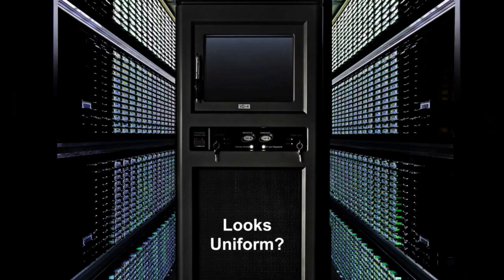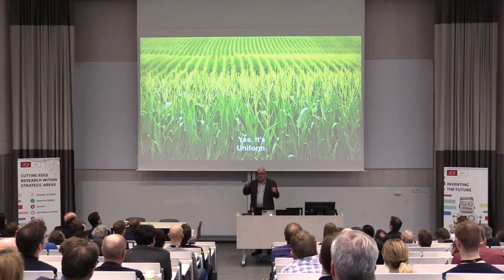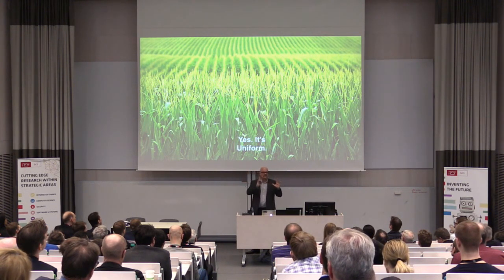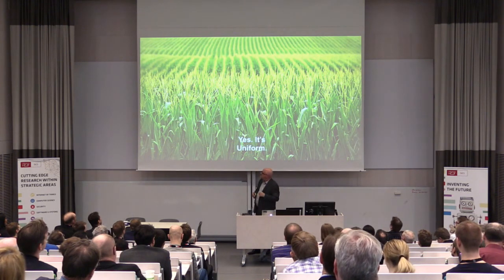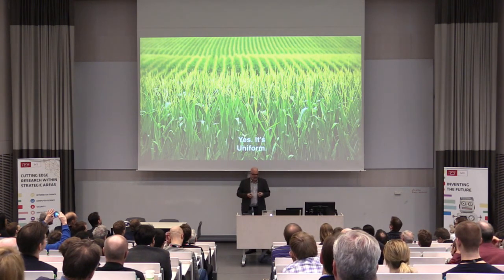Uniformity really comes into play here. A data center looks uniform because of the economics of the application. It's like cornfields in Iowa — a monospecific ecosystem, just one species, probably genetically modified, probably one type of DNA. That's very economical and very scalable. If you want to add a couple more acres, you don't have to do a lot of thinking about it. The DNA is the app — there's just one thing you want to run and you're optimizing everything around it.